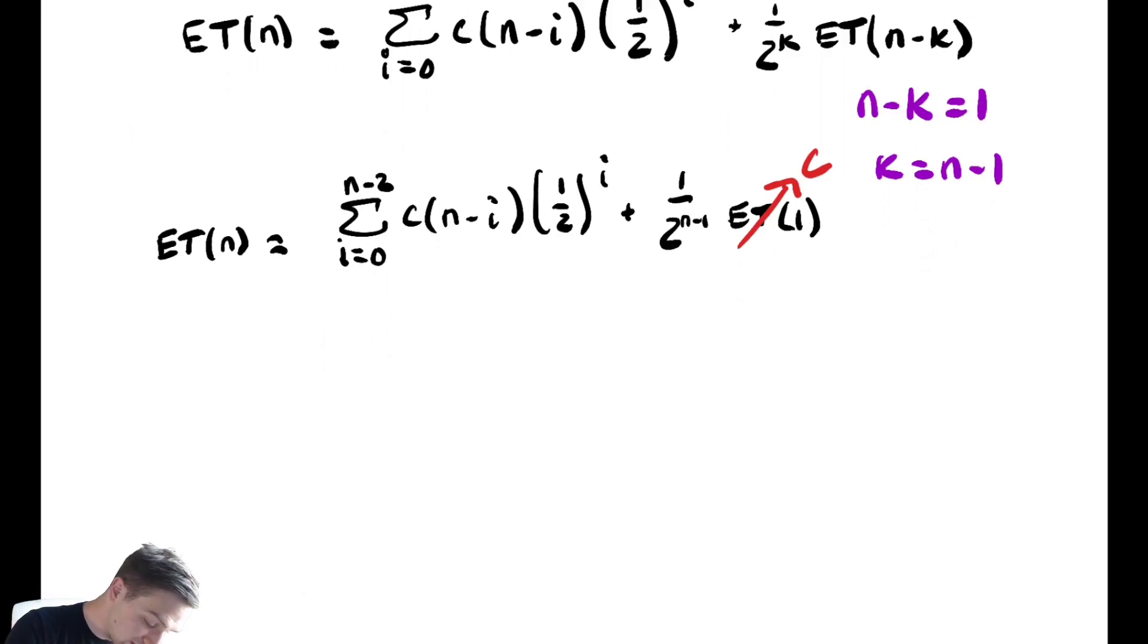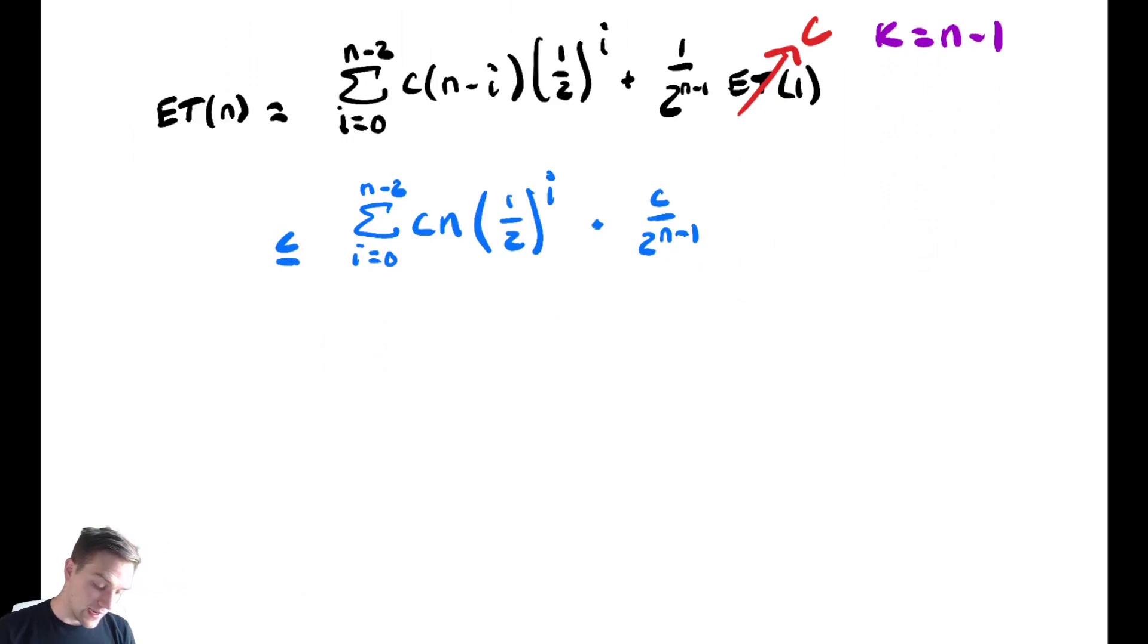So, to bound this above, what we are going to do is we are going to replace every single term in that summation with cn times 1 over 2 to the i. Then we are going to keep the c over 2 to the (n-1) out here. And now, we can factor out a cn out of that first summation from i equals 0 to n-2 of 1/2 to the i plus c over 2 to the (n-1).